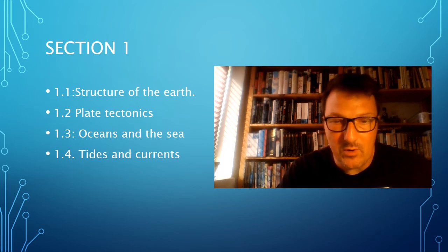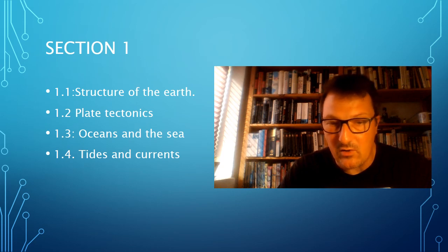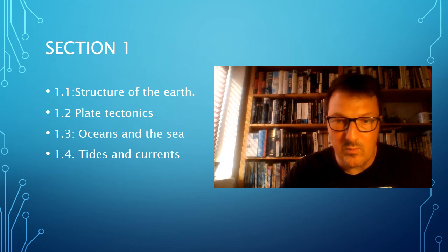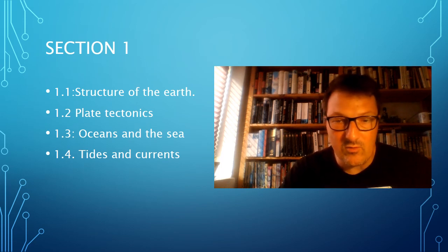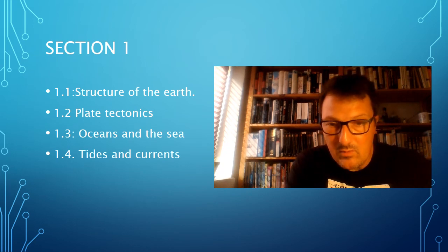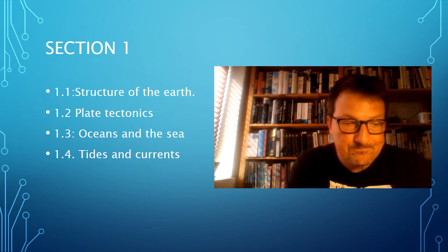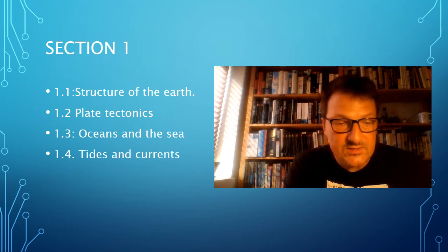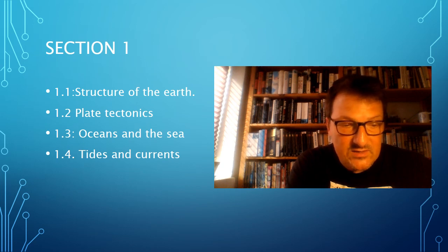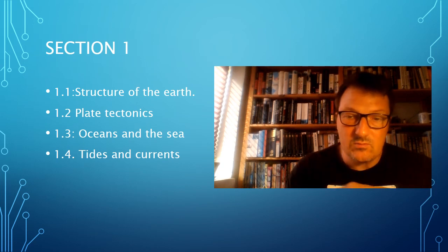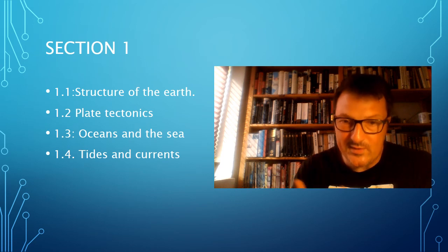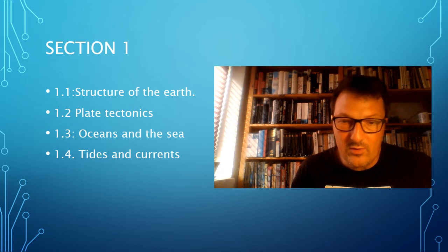Section 1.4 will go a bit more into physics — looking at tides and currents, how the pull from the moon and the sun affects our tidal ranges, and how currents move the big conveyor belt around our planet with water. We'll look at gyres and information on rip currents. So the first part is really about what is the Earth, what is the ocean, and then the physics of movement of water in the oceans.